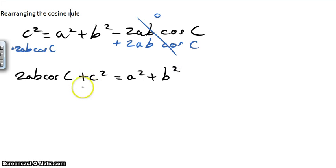Next move to make is to get rid of the c squared. By doing a subtraction there, you can see that those two would disappear.